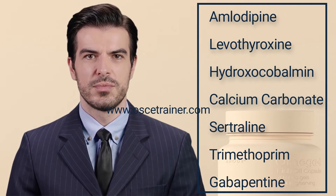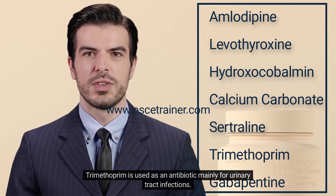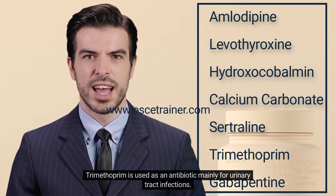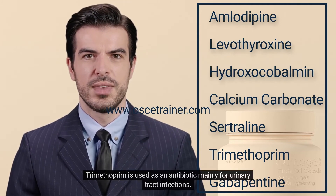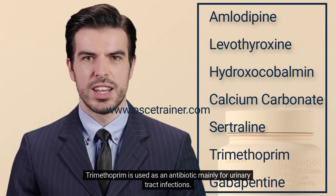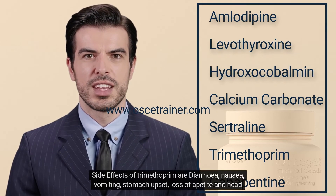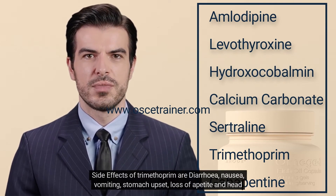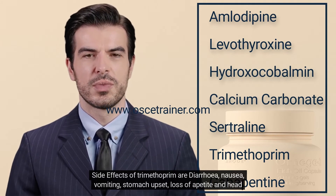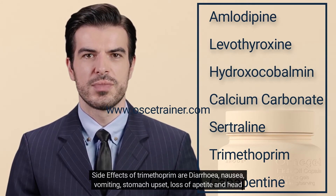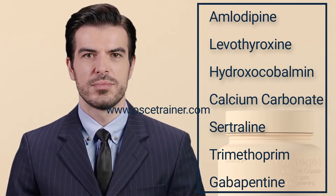Trimethoprim is used as an antibiotic mainly for urinary tract infections. Side effects of trimethoprim are diarrhea, nausea, vomiting, stomach upset, loss of appetite, and headache.